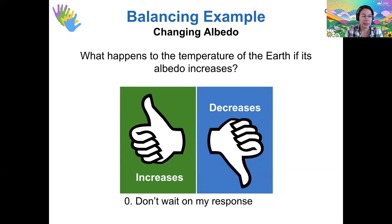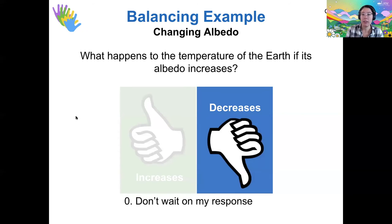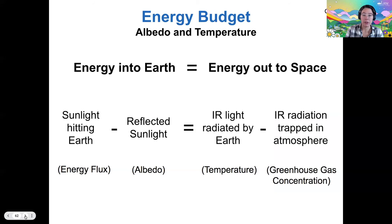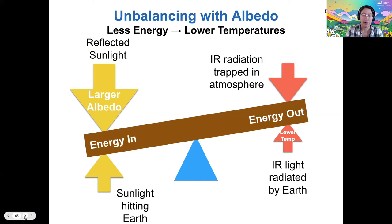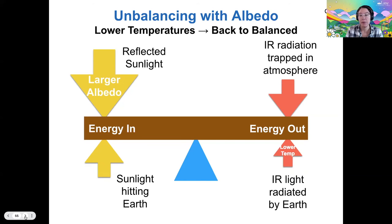What would happen to the temperature of the Earth if its albedo were to increase? A majority of votes say the albedo increasing would tend to decrease Earth's surface temperature. This can be understood using our energy balance equation. If our albedo goes up — meaning we're more reflective — then the amount of reflected sunlight would increase. So the temperature would decrease and the infrared light radiated by Earth would decrease in turn. With a larger albedo, we'd unbalance the energy budget, the infrared light radiated by Earth would decrease, and we'd reach a new lower equilibrium temperature.